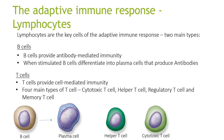So what are lymphocytes? Lymphocytes are the key cells of the adaptive immune response and there are two main types: B cells and T cells. B cells provide antibody-mediated immunity. When stimulated, B cells differentiate into plasma cells that produce antibodies. T cells provide cell-mediated immunity. There are four main types of T cells: cytotoxic T cell, helper T cell, regulatory T cell, and memory T cell.